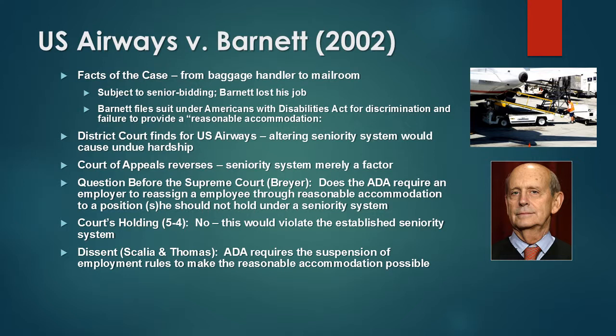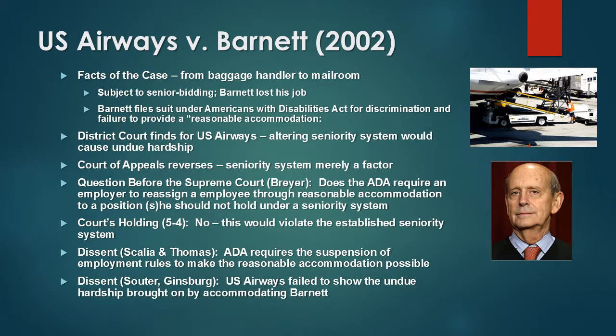Fascinatingly, in dissent, Scalia and Thomas said the ADA requires the suspension of employment rules to make the reasonable accommodation possible — a much more pro-disability standard. They argued that the least the employer could do is merely suspend the employment rules. The other two dissenters, Souter and Ginsburg, stated that US Airways failed to show the undue hardship brought on by accommodating Barnett, asking why you couldn't have two promotions in the mailroom — one for Barnett and one for the most senior person — to make the accommodation reasonable.